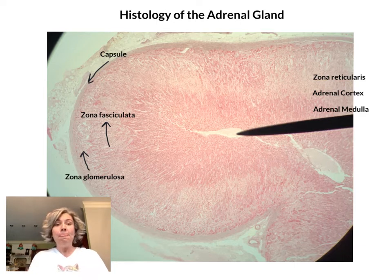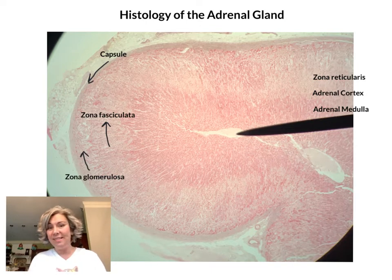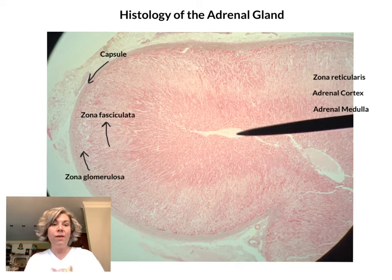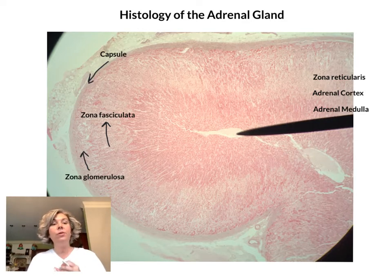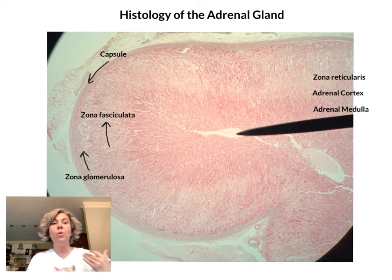If this long-term stressor continues, it can actually have a negative impact on the body. It can cause suppression of the immune system — that's why when you're stressed out you're more likely to get sick. The zona fasciculata secretes cortisol, cortisone, and another hormone called corticosterone. They all help to increase sugar levels, increase protein breakdown, and fat breakdown in order to help your body deal with long-term stress.